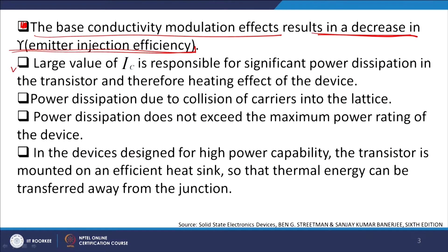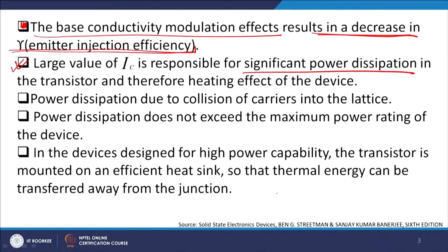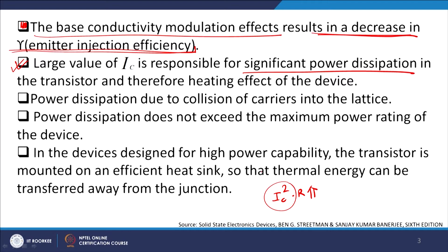In common emitter configuration, collector currents are very high, which results in significant power dissipation in the transistor and therefore self-heating of the device. Since IC is very high, IC²×R — the power dissipation — is typically very large. It is a parabolic increase: even if you double your collector current, the power dissipation increases by 4 times, which is quite large.